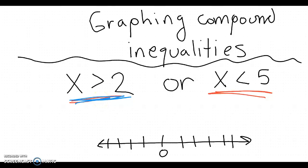So my answer might be x is greater than 2, so I'm going to go over to 2. I'm going to put an open dot, and since it's greater than, I'm going to put an arrow that way.